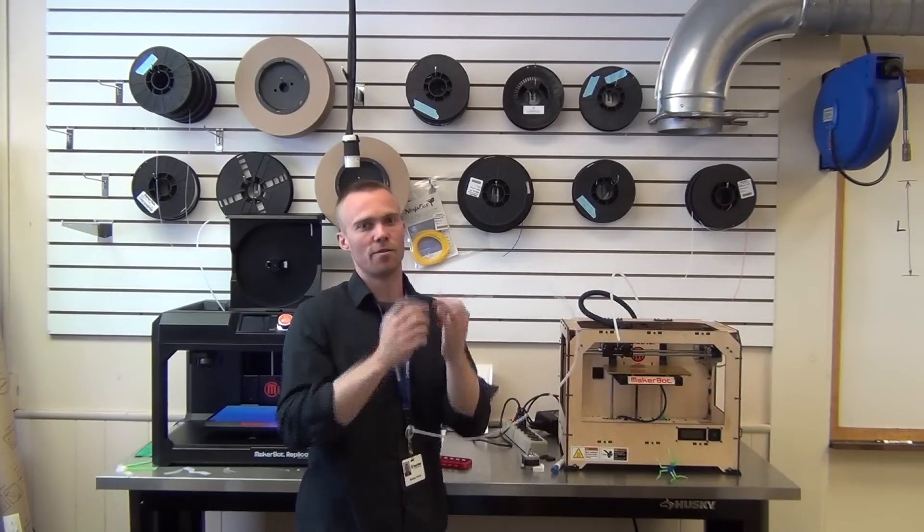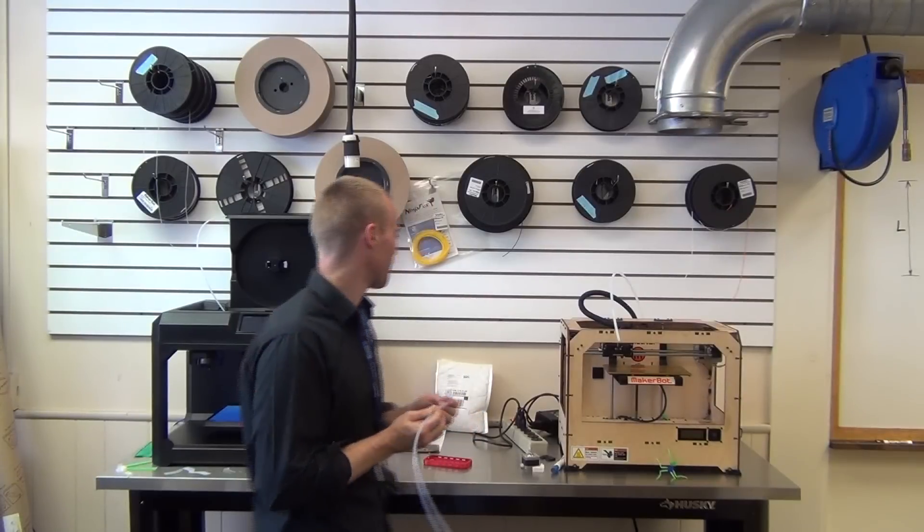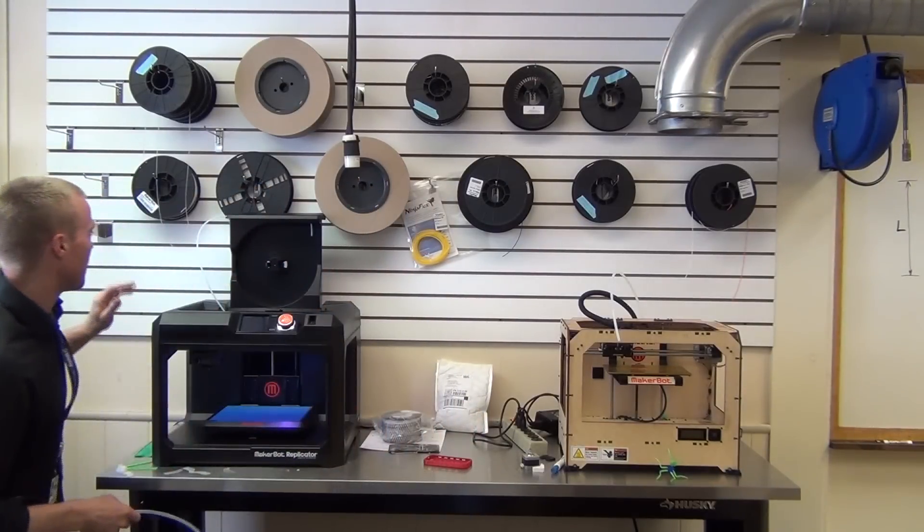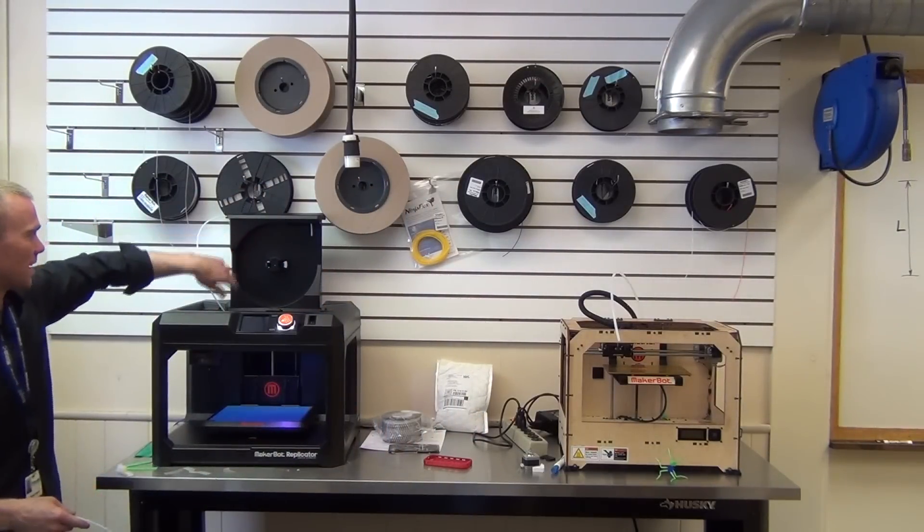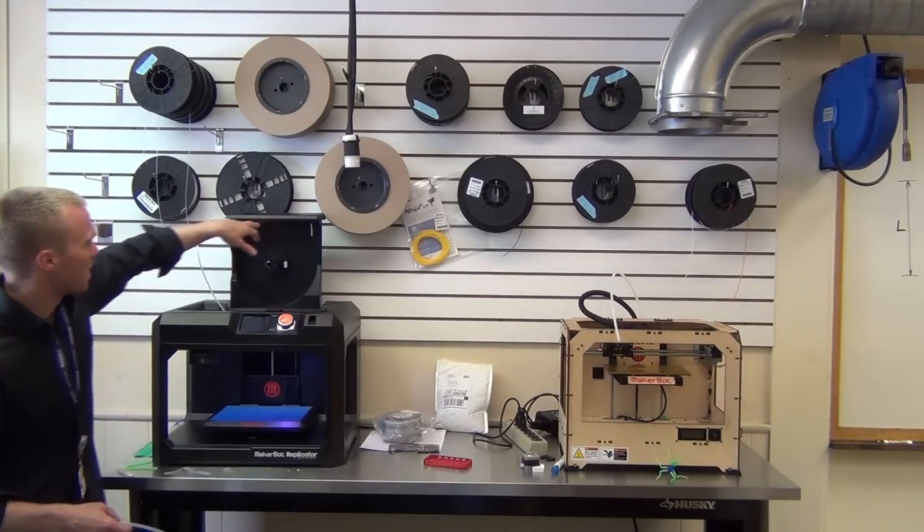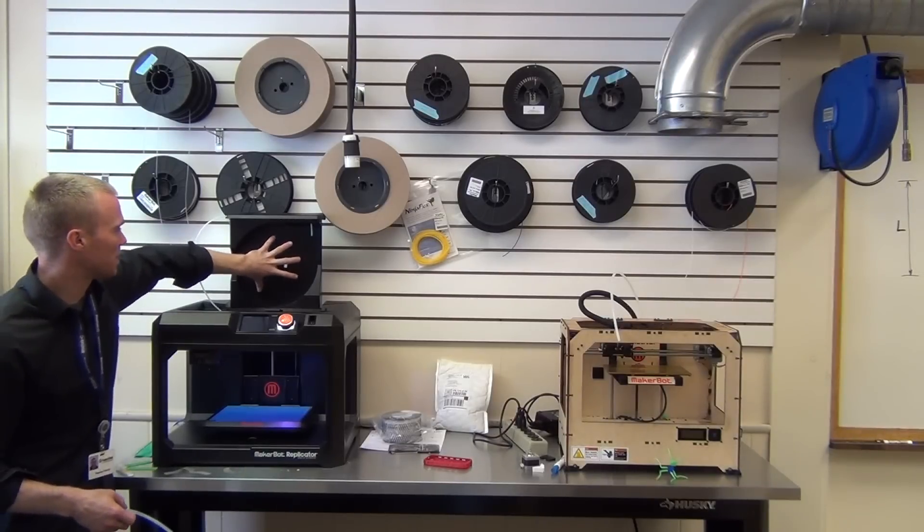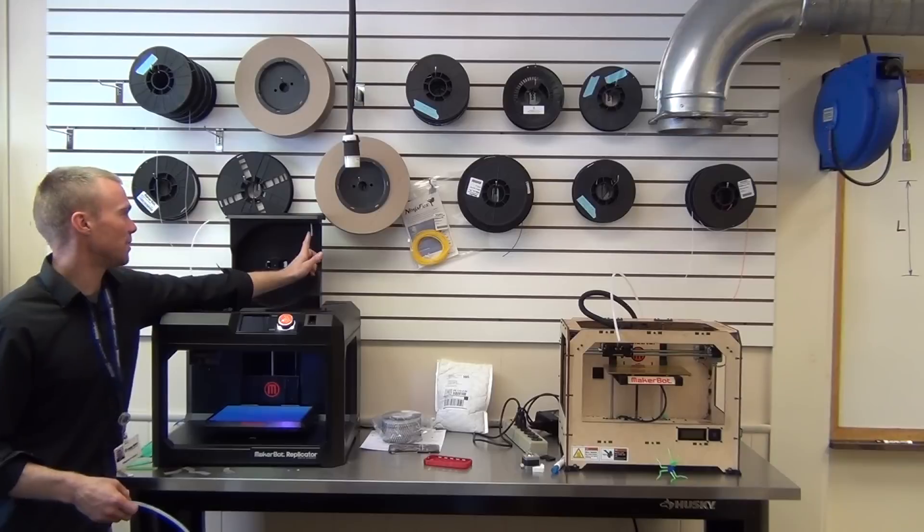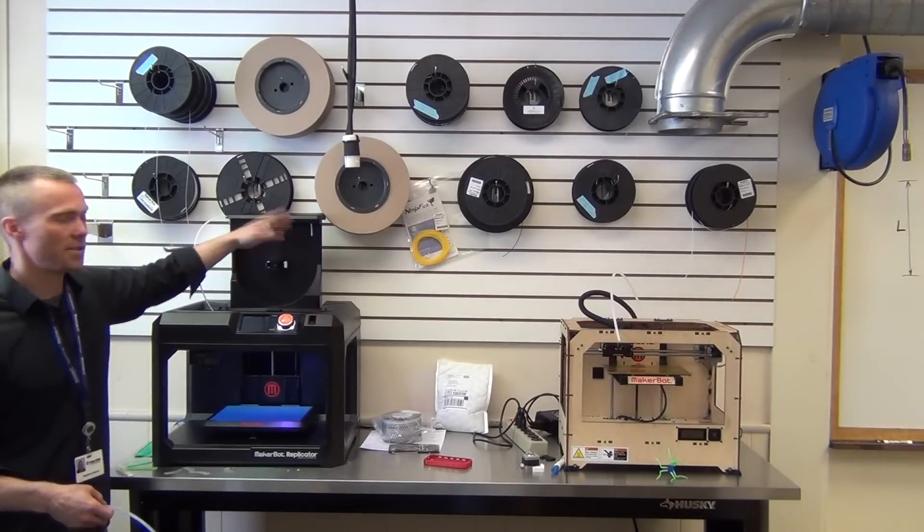So looking at the Gen 5, they went to a different design with the guide tube here. It's a little smaller diameter and it goes through a sharp bend, as the filament's mounted here. It comes, feeds up through, and then bends 90 degrees at a very small radius.